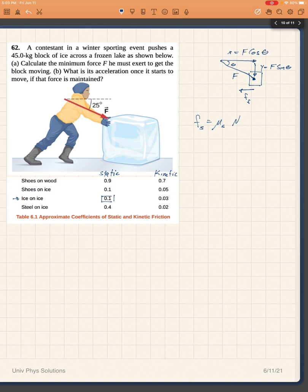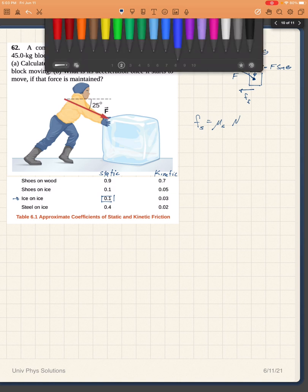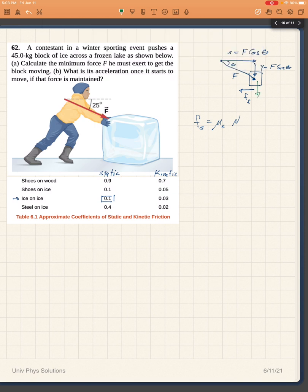Now the normal force is the force that is pressing one surface against the other. The forces that are pressing one surface against the other in this case is just the weight plus the y component which is also pressing the block of ice against the surface of the frozen lake. So my normal force is going to be equal to mg plus f sine of theta.